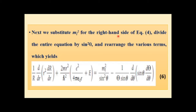Similarly, substituting ml² on the right-hand side of equation 4 and dividing the entire equation by sin²θ and rearranging yields the equation for Theta. This is also a homework exercise following the given instruction. After dividing by sin²θ, we obtain the term ml²/sin²θ minus (1/Θ)(1/sinθ)(d/dθ)(sinθ dΘ/dθ). These steps can be done manually as homework.